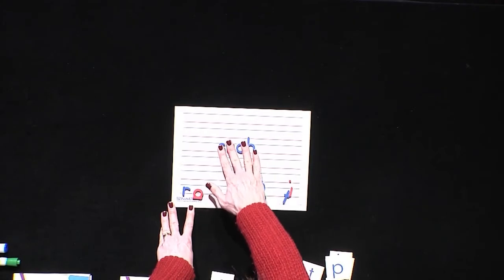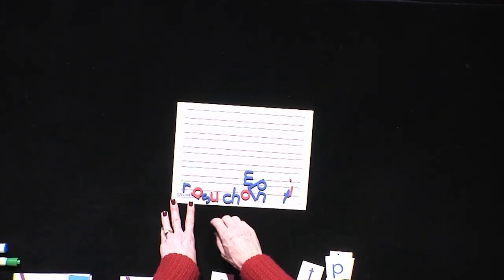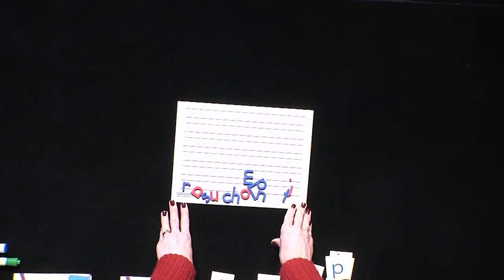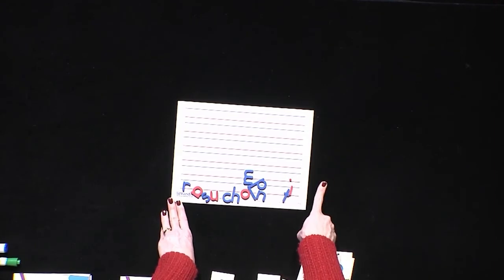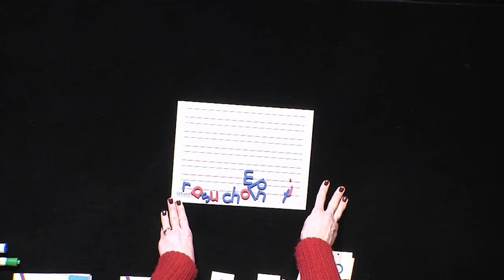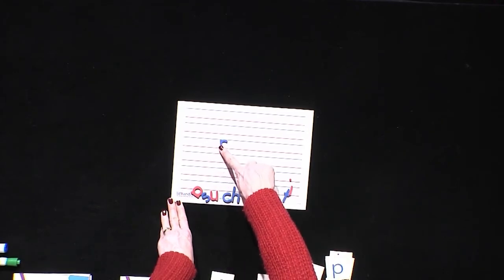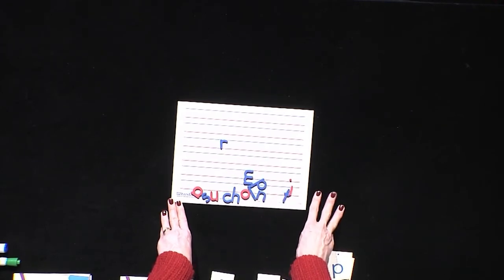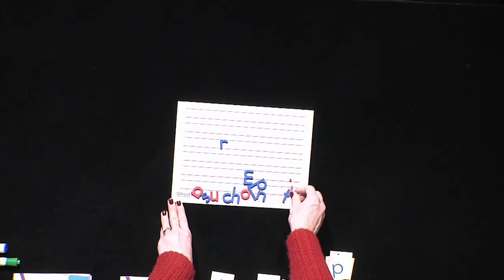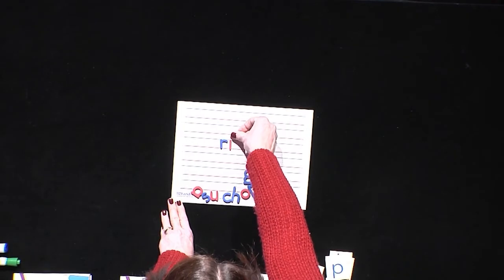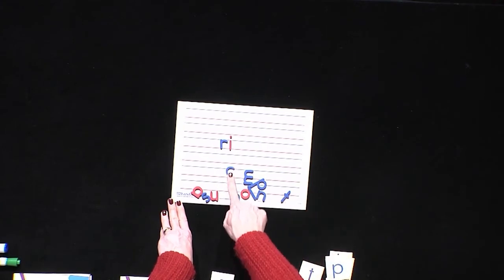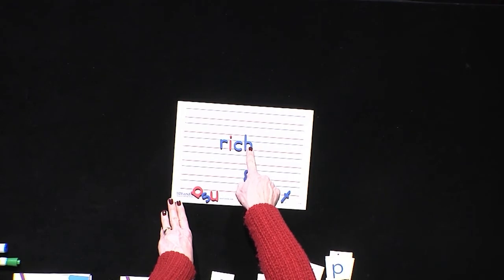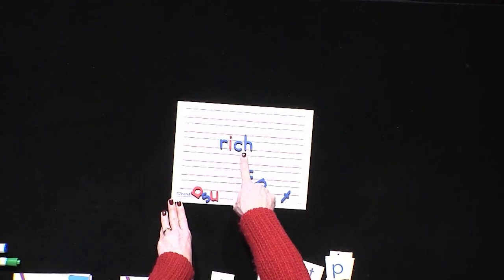I want you to help me spell one more word, and then I'm going to let you try some at home. The last word we're going to spell together is 'rich'. Count the sounds: R-I-CH. What was that first sound? R — made with the letter R. Next we hear 'ih' — the letter I. And the last sound in 'rich' is CH. What makes that CH sound? C and H. So 'rich' is spelled R-I-C-H.